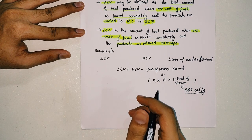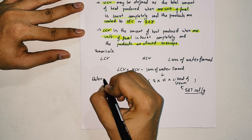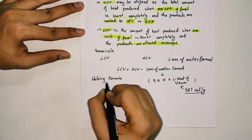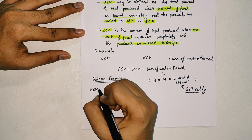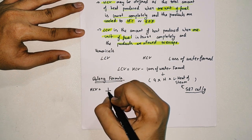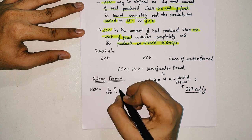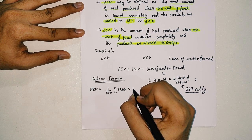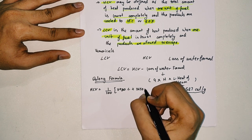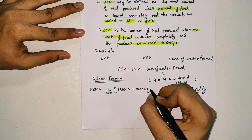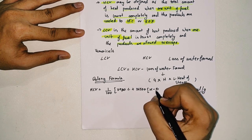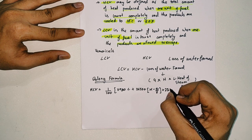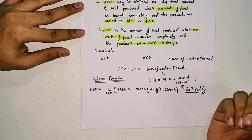The formula for HCV is given by Dulong's formula. According to Dulong's formula, HCV = (1/100) × [8080C + 34500 × (H − O/8) + 2240S], and the unit for this is calories per gram.